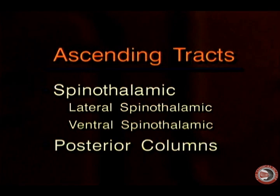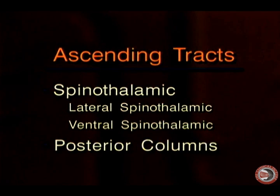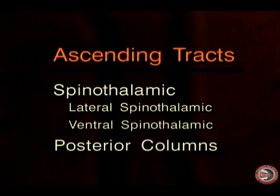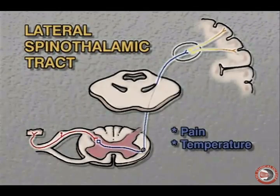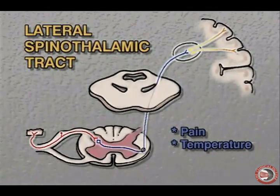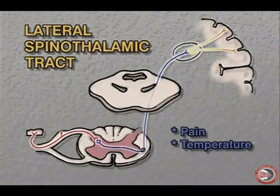Now let's look at the ascending tracts of the spinal cord. There are primarily two ascending or sensory tracts which the clinician should be familiar with. These tracts include the spinothalamic tract, which includes the lateral and ventral portion, and the posterior columns. In evaluating the lateral spinothalamic tract we're looking for sensations of pain and temperature.